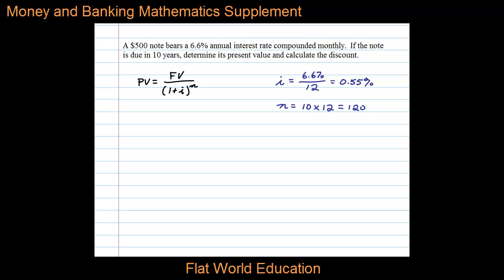Now we're ready to substitute. So the present value equals the $500 divided by 1 plus the interest rate per period decimalized 0.0055 raised to the 120 power. We can simplify this: $500 divided by 1.0055 raised to the 120 power. In a calculator that gives us $258.89.